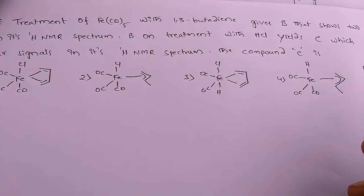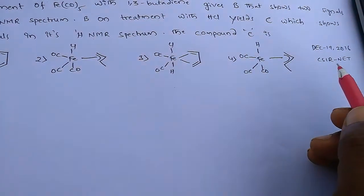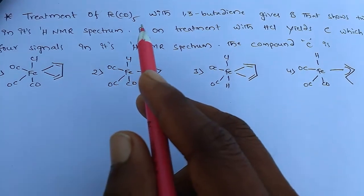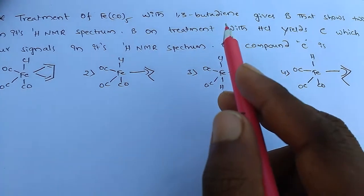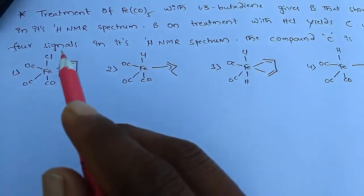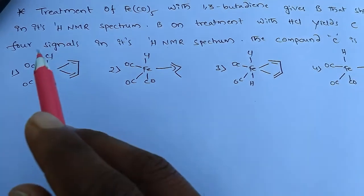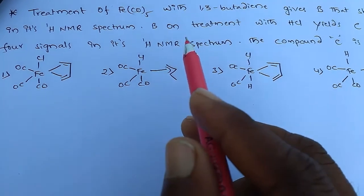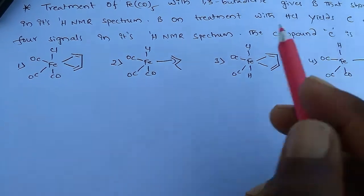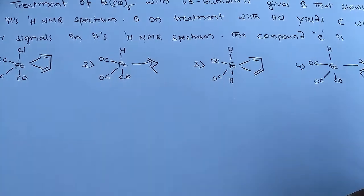Hi, this is Ranjivy. This question appeared in December 19, 2016 CSIR-net. The question is: treatment of iron pentacarbonyl with 1,3-butadiene gives B, that shows 2 signals in its H-NMR spectrum. B on treatment with HCl yields C, which shows 4 signals in its H-NMR spectrum. The compound C is?